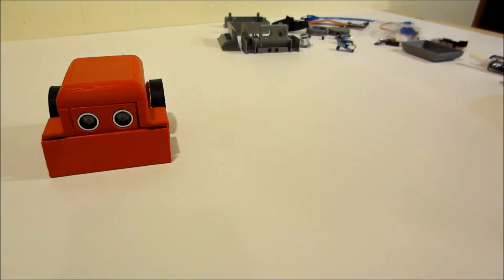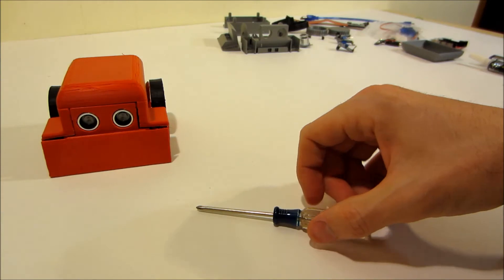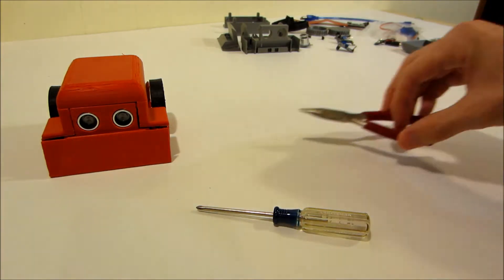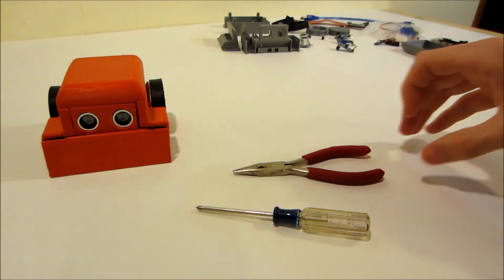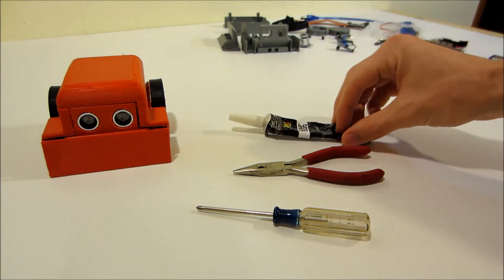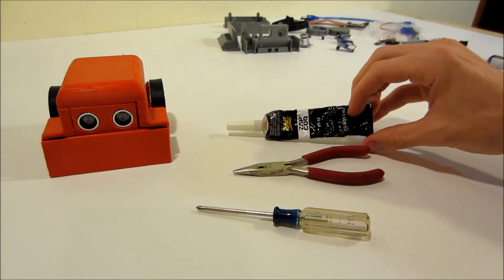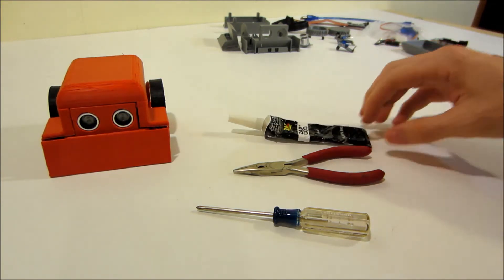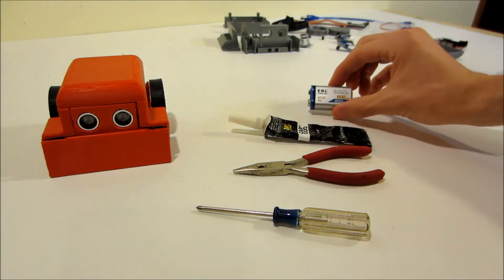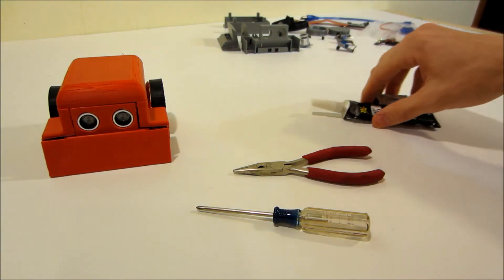The things that are not included in that kit that are handy to have include a tiny Phillips screwdriver, a tiny needle-nose pliers, some silicone glue of some sort, a hot glue would also work, and a 9-volt battery. So we'll put these aside.